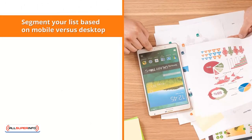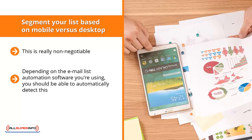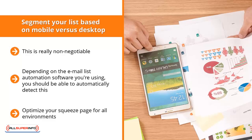Segment your list based on mobile versus desktop — this is really non-negotiable. Over 60% of internet users view the internet through a mobile device, and these devices have different screen sizes. Make sure your mailing list segments list buyers based on their screen preference; depending on the email list automation software you're using, you should be able to automatically detect this. Regardless, your squeeze page must be mobile ready — it doesn't matter what device visitors use, your page should look its best. Optimize your squeeze page for all environments, whether your audience is viewing through a mobile phone, a desktop, or a tablet.